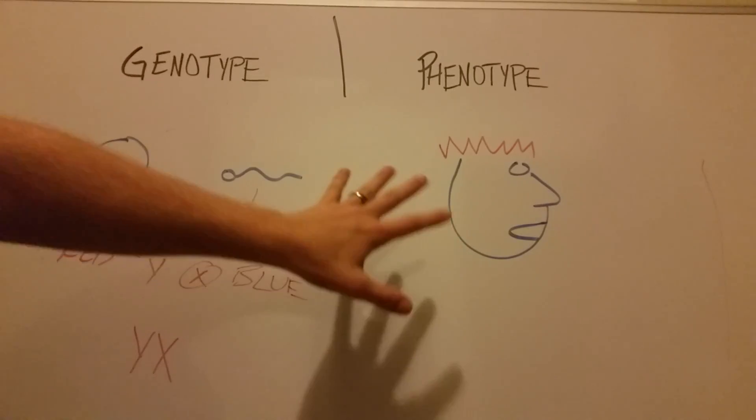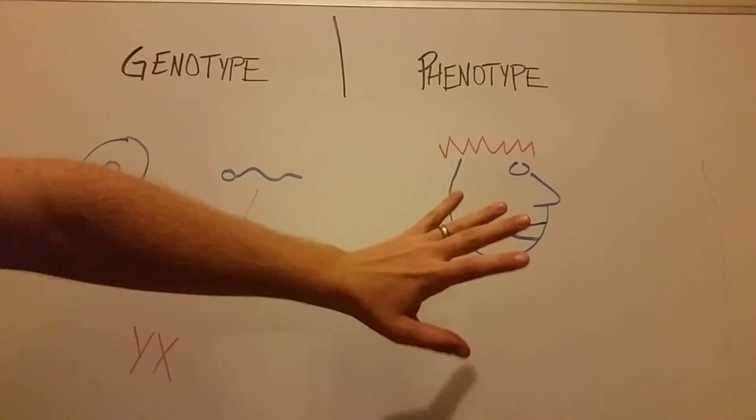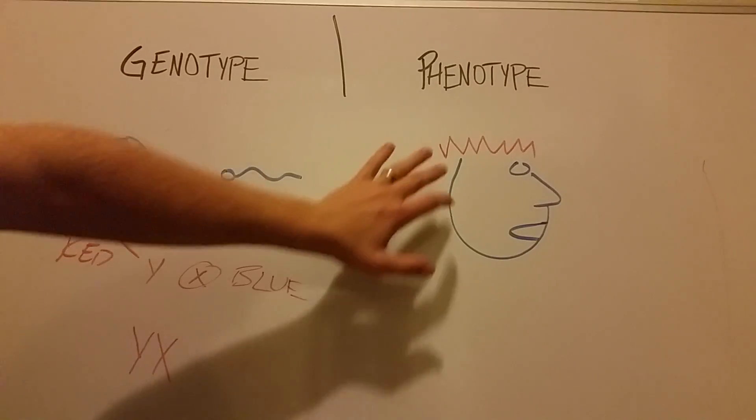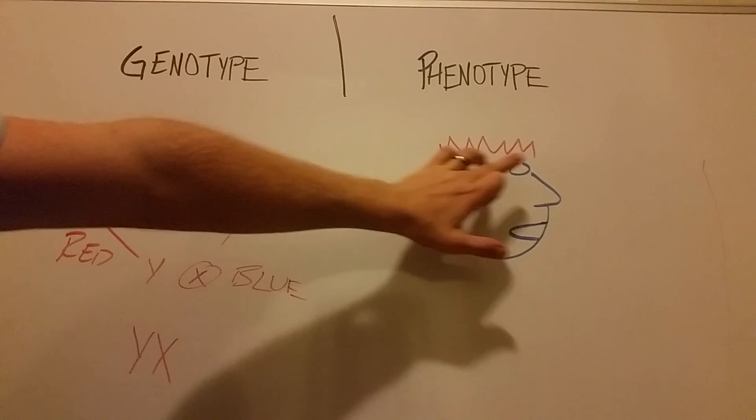However, if someone came to you and said, okay, now what is that organism's phenotype? You wouldn't mention the blue, you would just mention what you see. So you'd say they have red hair.